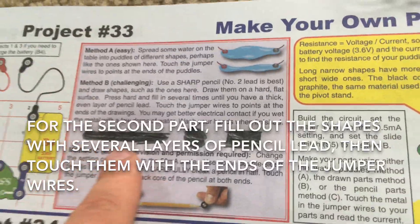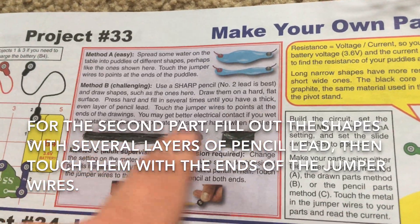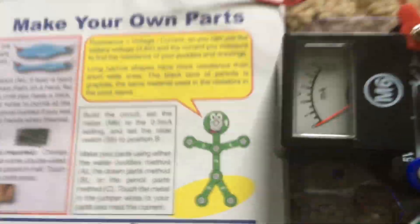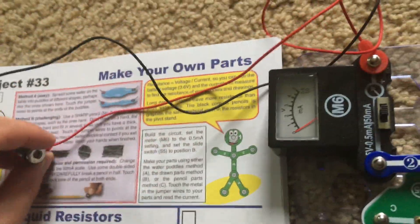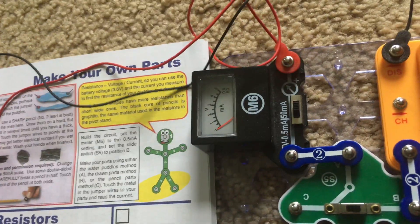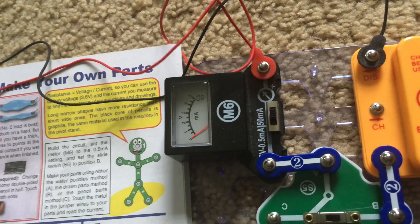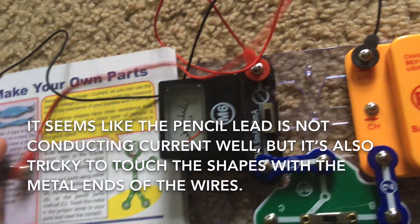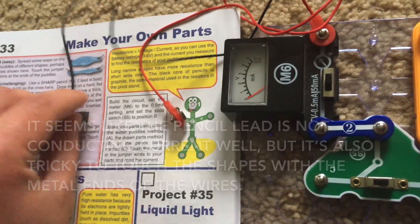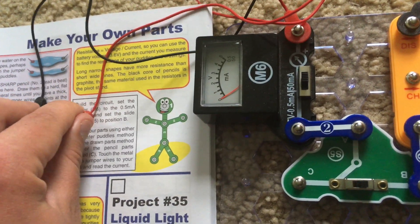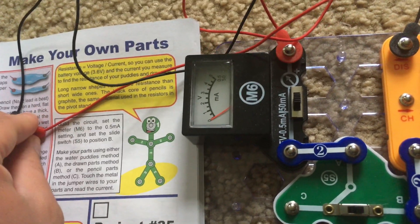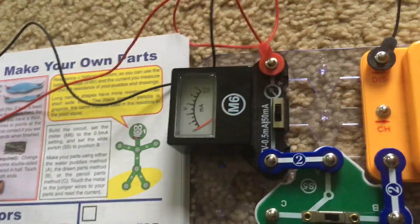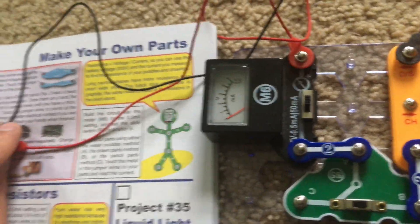For method B, you need to fill out these shapes with several layers of pencil lead and then touch the ends of the jumper wires to the shapes. Right now, barely anything is noticeable. Sometimes it's very tricky, especially on the smaller shapes. You have to make sure that the metallic ends of the wires are directly touching the lead.